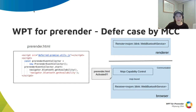If we don't register the mojo interfaces to the map for specific behaviors in MCC, it will be deferred by default during pre-rendering. So we can get the result in the test page after the pre-rendering page is activated.